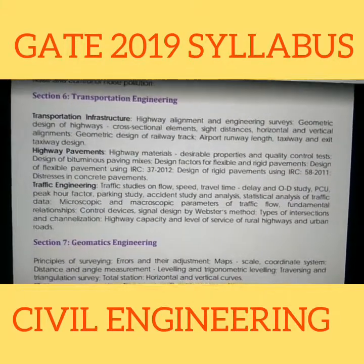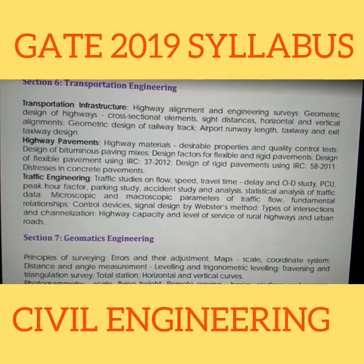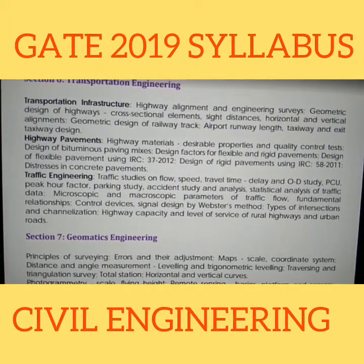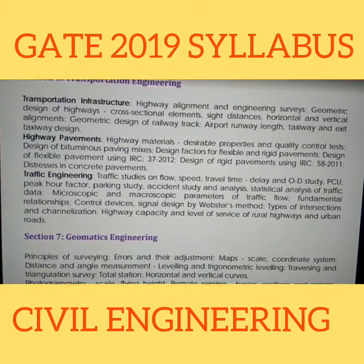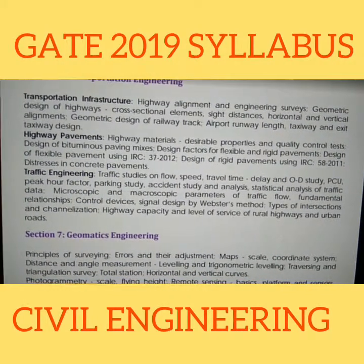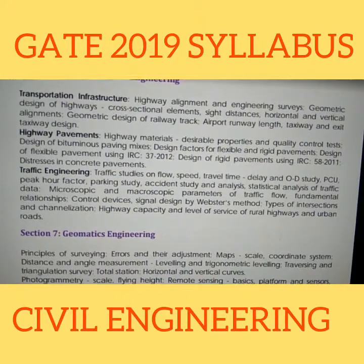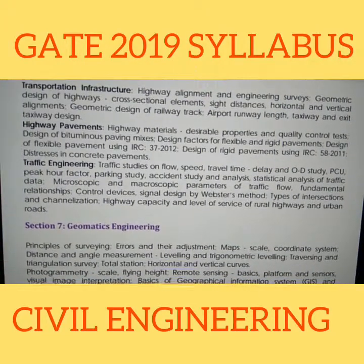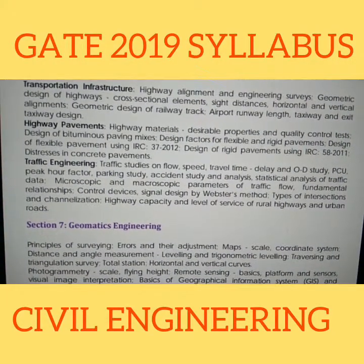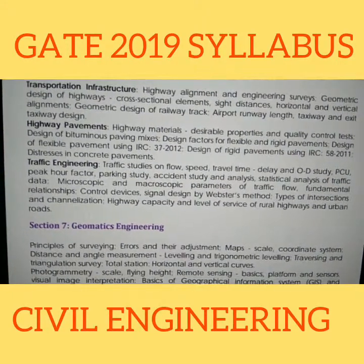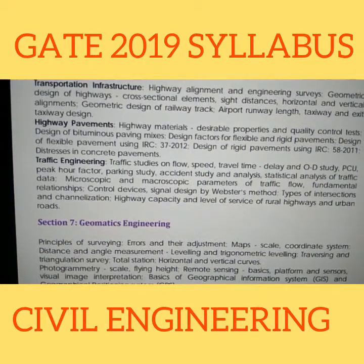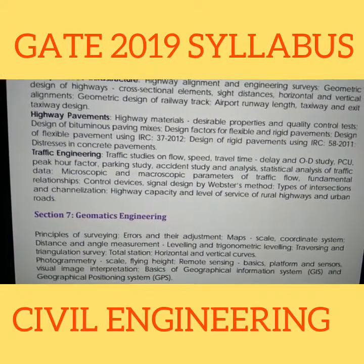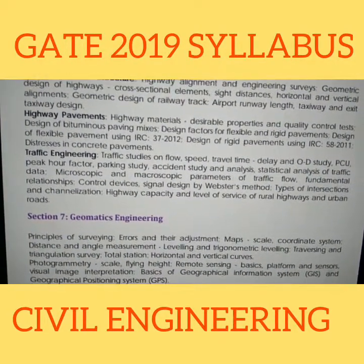Section 6: Transportation Engineering — Transportation Infrastructure: Highway Alignment and Engineering Surveys, Geometric Design of Highways, Cross-Sectional Elements, Sight Distances, Horizontal and Vertical Alignments, Geometric Design of Railway Track, Airport Runway Length, Taxiway and Exit Taxiway Design. Highway Pavements: Highway Materials, Desirable Properties and Quality Control Tests, Design of Bituminous Paving Mixes, Design Factors for Flexible and Rigid Pavements, Design of Flexible Pavement using IRC 37-2012, Design of Rigid Pavement using IRC 58-2011, Stress in Concrete Pavements.